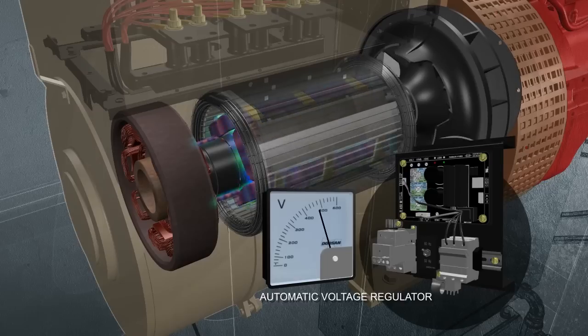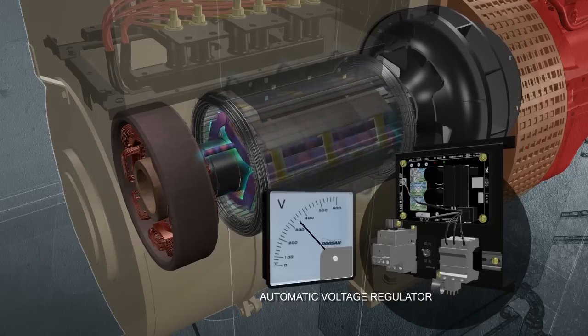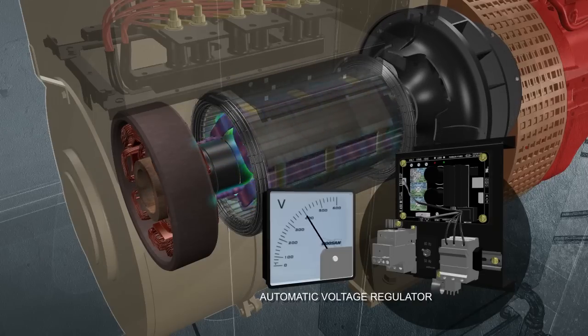During heavy power demands, voltage decreases, causing the AVR to increase the magnetic field. Conversely, when power demands are low, the AVR tempers the field.